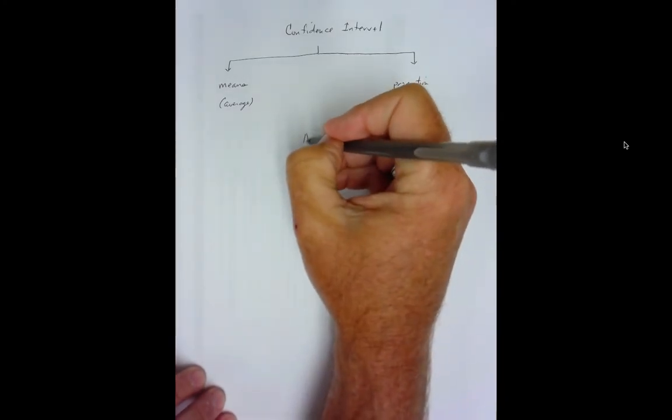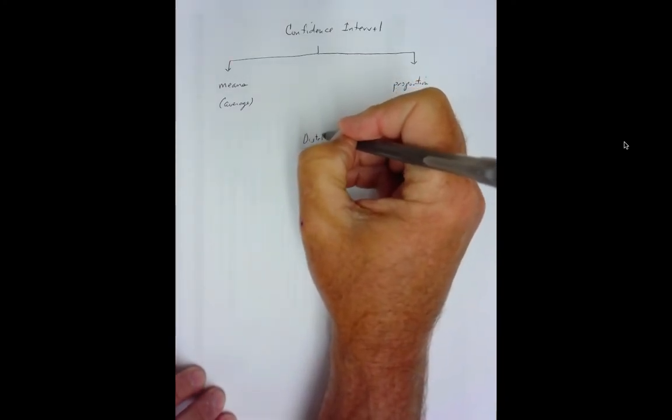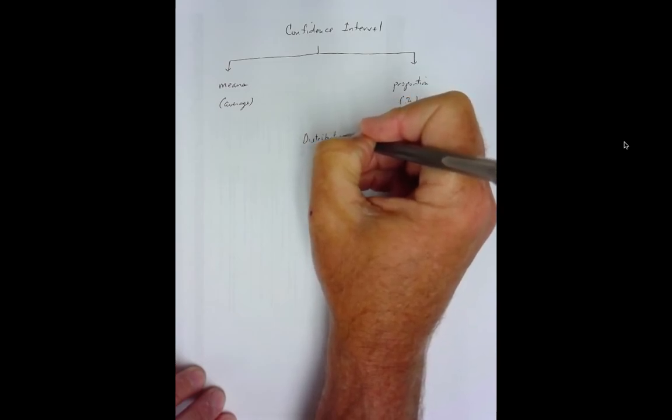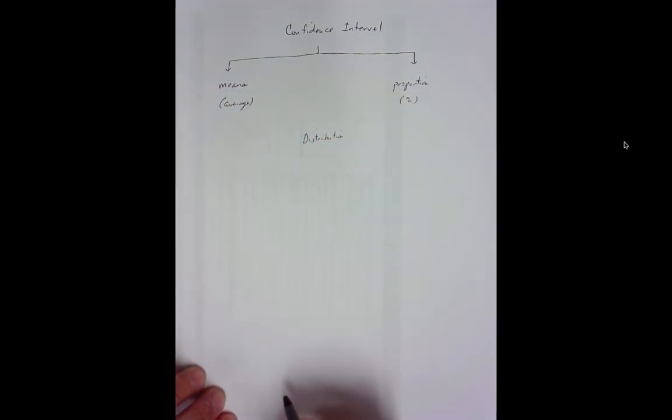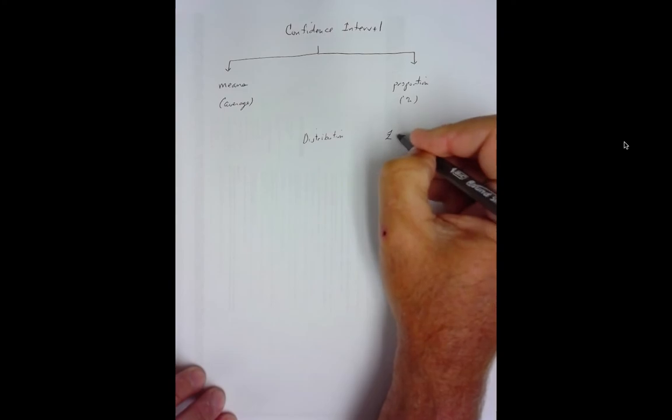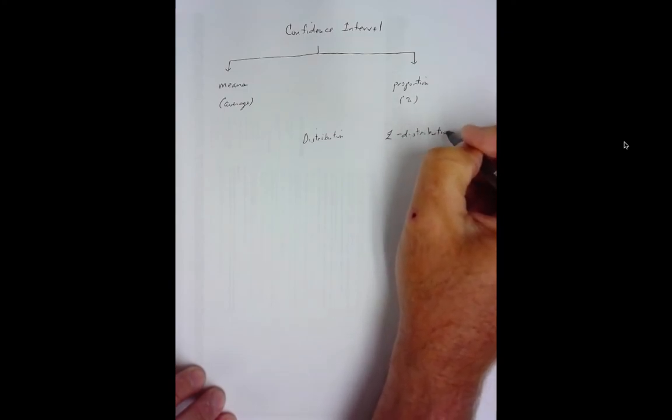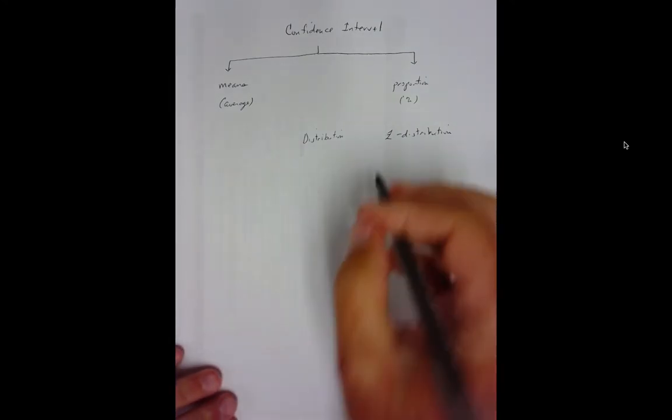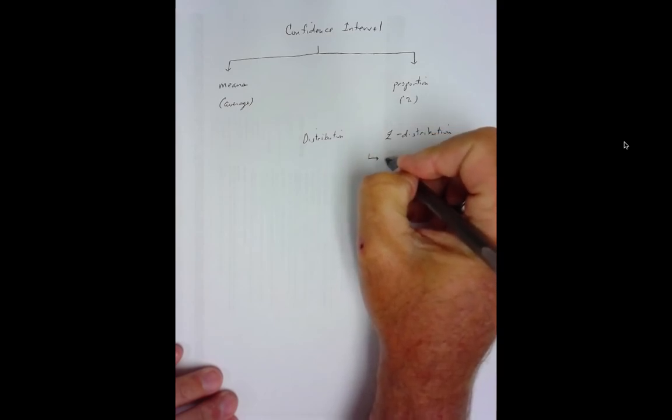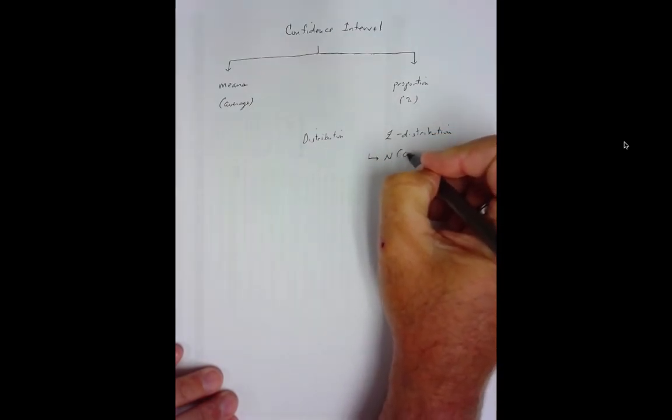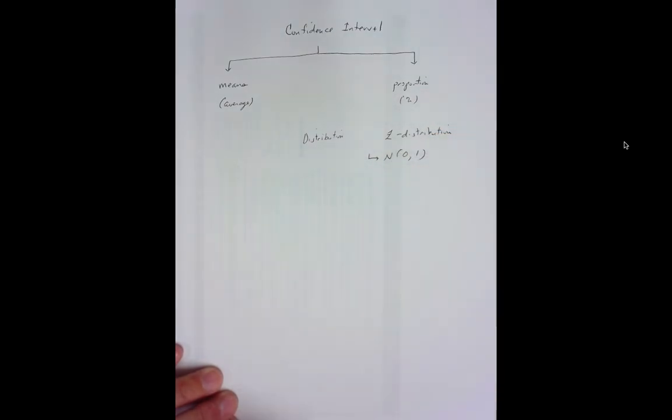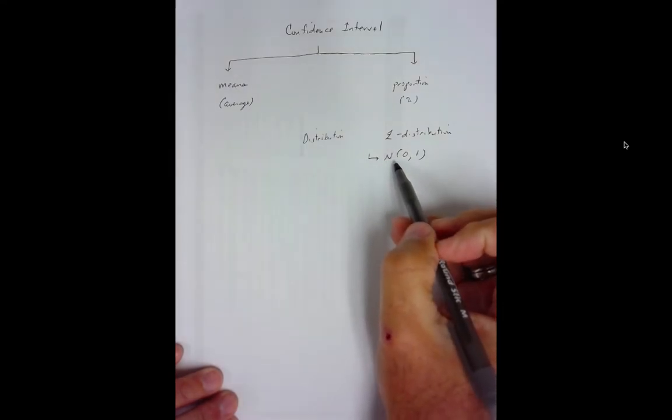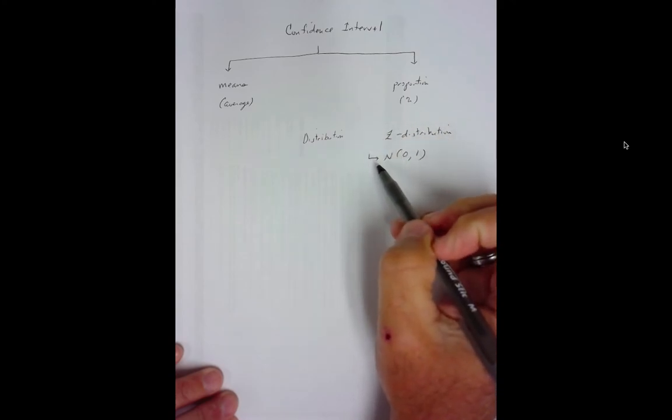So guys, proportions deal with percentage. If the unknown we're looking for is a percentage, we're going to do a proportion problem. If it's examining an unknown average, we're going to do a mean problem. Now, the next thing we get into is what type of distribution do we use to model these problems? Well, it turns out for the proportion problem, we use what's called a Z-distribution. And guys, we should know by now that these are normal with a mean of 0, standard deviation of 1.